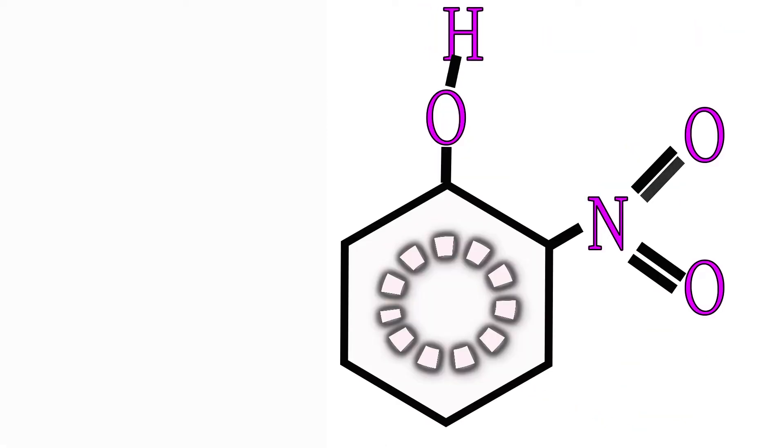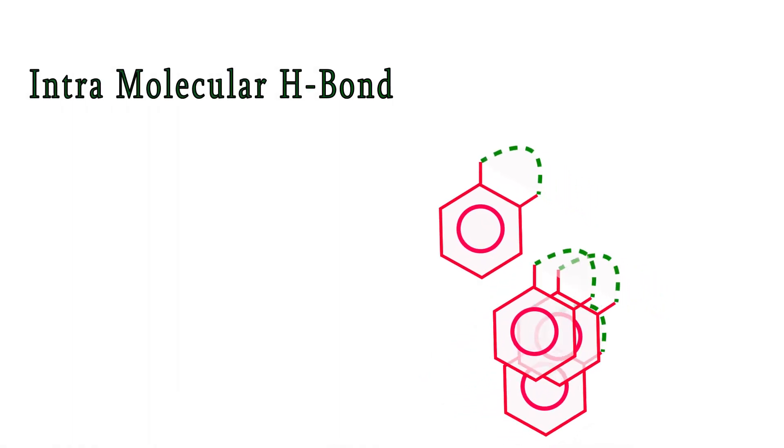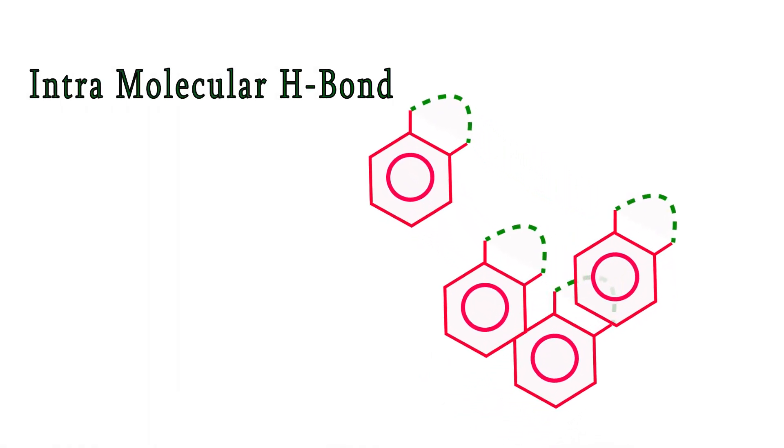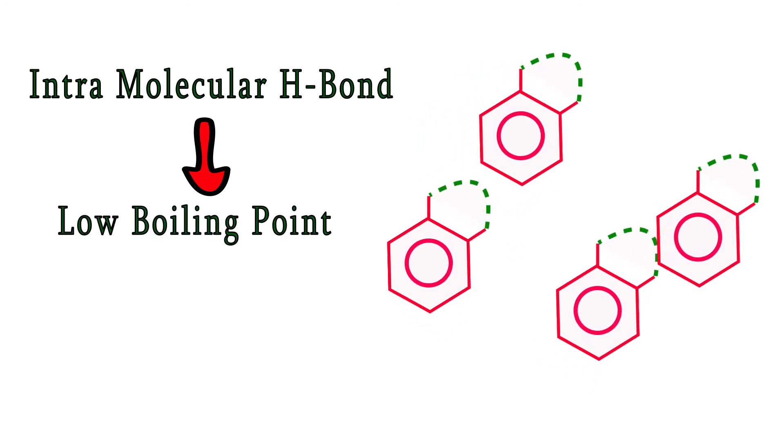Ortho nitrophenol forms hydrogen bonds within the same molecule as electron density of the oxygen from the nitro group and hydrogen of the phenol group is nearby. This leads to intramolecular hydrogen bonds. Ortho nitrophenol has low boiling point and is a more volatile isomer.